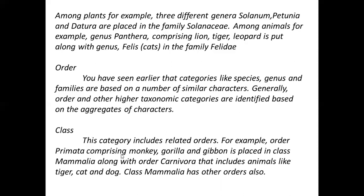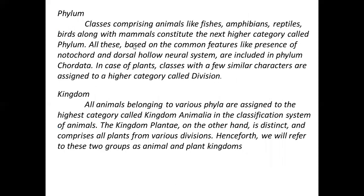In class, you can also see examples like primates, monkeys, gorillas, and similar groups. After class comes phylum. Phylum is created by combining classes with common features. And then all phyla together make up a kingdom. In the previous class, we talked about plant kingdom and animal kingdom. In the next chapter, you will study the two-kingdom classification, three-kingdom classification, and five-kingdom classification. The kingdom is the largest and most diverse group.